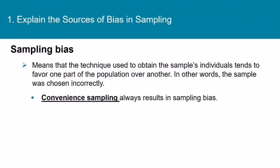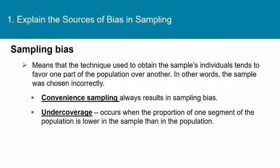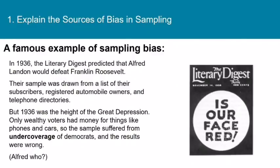Convenience sampling always leads to a sampling bias. Undercoverage occurs when the proportion of one segment of the population is lower in the sample than it is in the population. Here's a famous example: in 1936, the Literary Digest predicted that Alfred Landon would defeat Franklin Roosevelt. Their sample was drawn from a list of their subscribers, registered automobile owners, and telephone directories. But in 1936, we were at the height of the Great Depression. Only wealthy voters had money for phones and cars, so the sample suffered from undercoverage of Democrats, and the results were wrong.